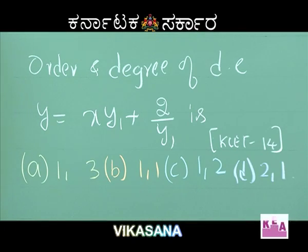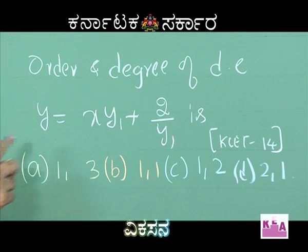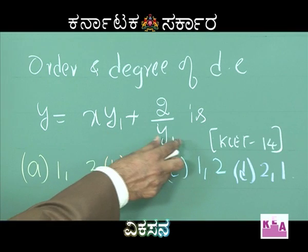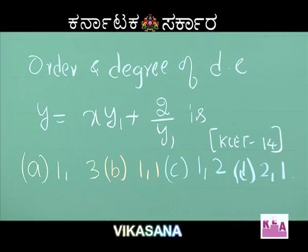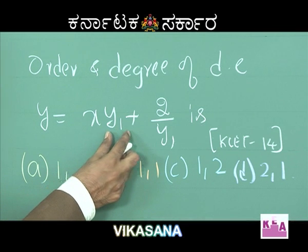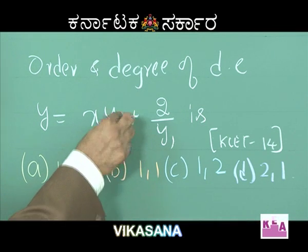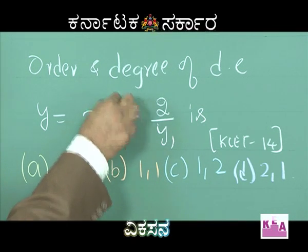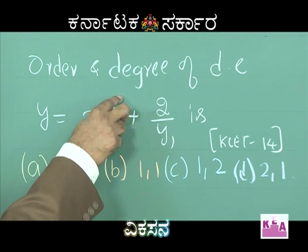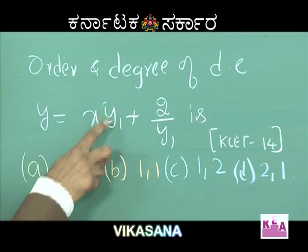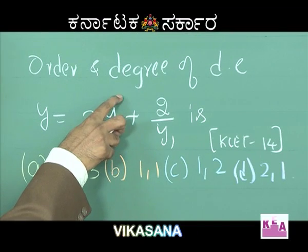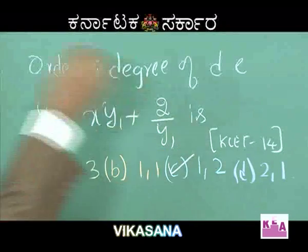Order and degree of the differential equation y = x·y1 + 2·y1. Taking LCM, y1 · y1 = y1 squared. That is, y1 is the first order derivative with power 2, giving second degree. Order 1, degree 2.